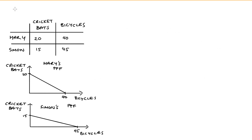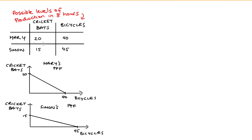In my example, Mary and Simon work for eight hours. Just to be really clear on the interpretation of these numbers in the table here: these numbers show how much production is possible given that Mary and Simon have eight hours. So if Mary spends all of her time on cricket bats, she can make 20. If she spends all of her time on bicycles, she can make 40.